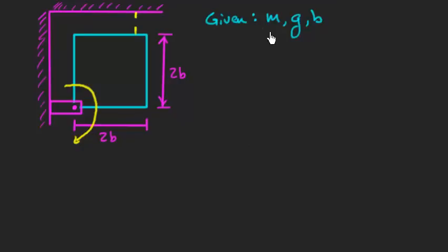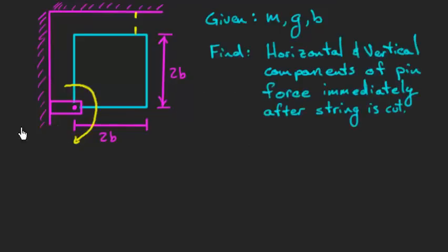The problem is as follows: given the mass of the plate, gravity, and the half-width and half-height of the square plate, I want to find the pin forces — the horizontal and vertical components — at the instant immediately after the string is cut.